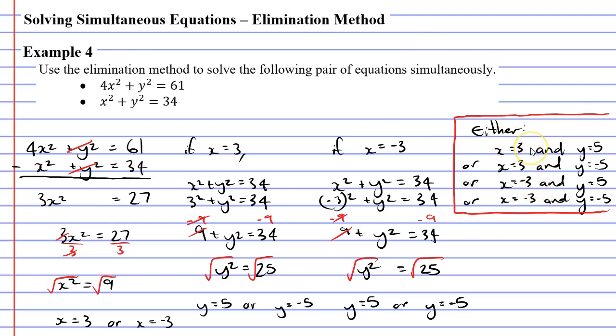Now, I'd like to check these results to see if they substitute correctly into these two equations here. We'll start with the first one, where x is 3 and y is 5. If x is 3, 3² is 9. 4 times 9 is 36. y is 5, 5² is 25. 36 + 25 does equal 61.